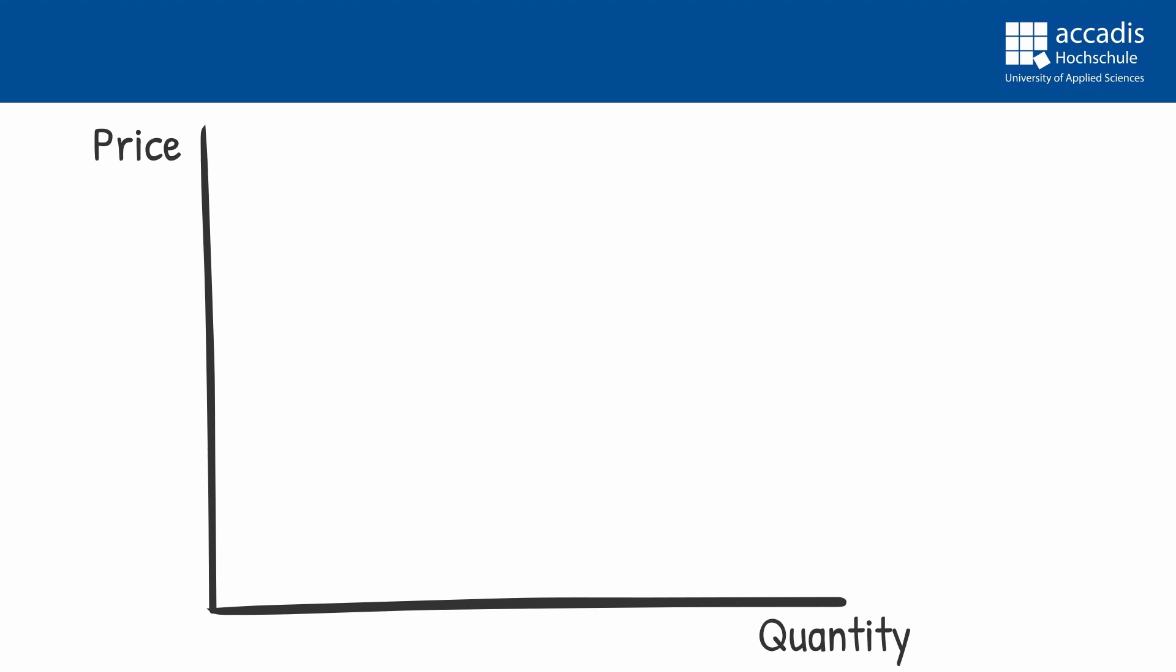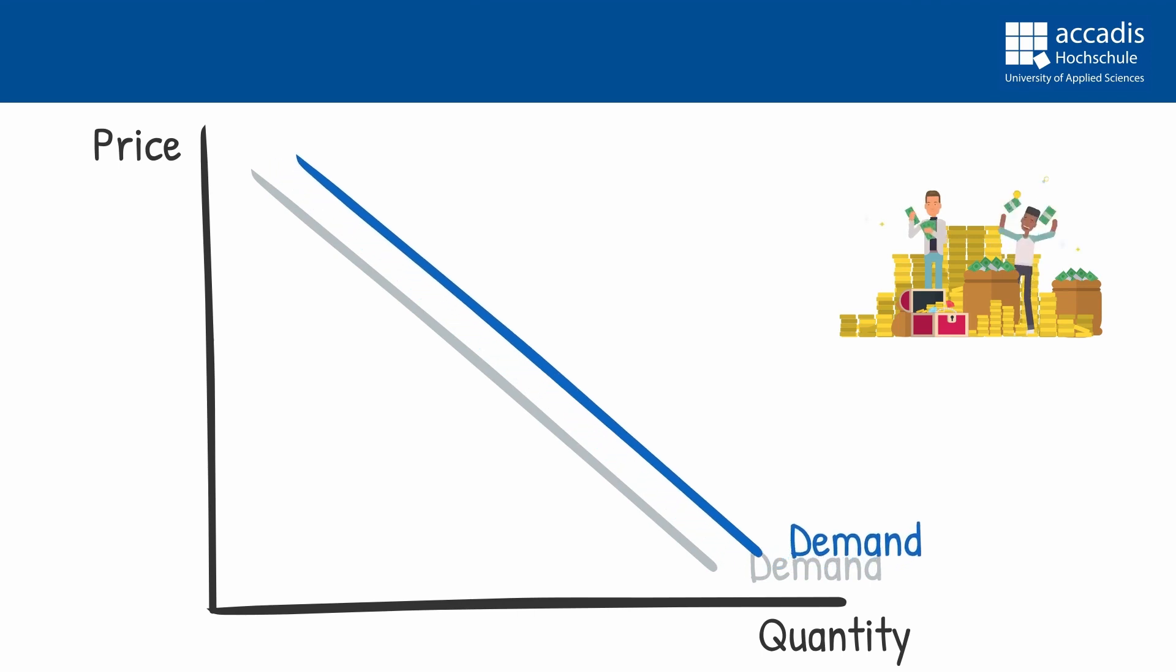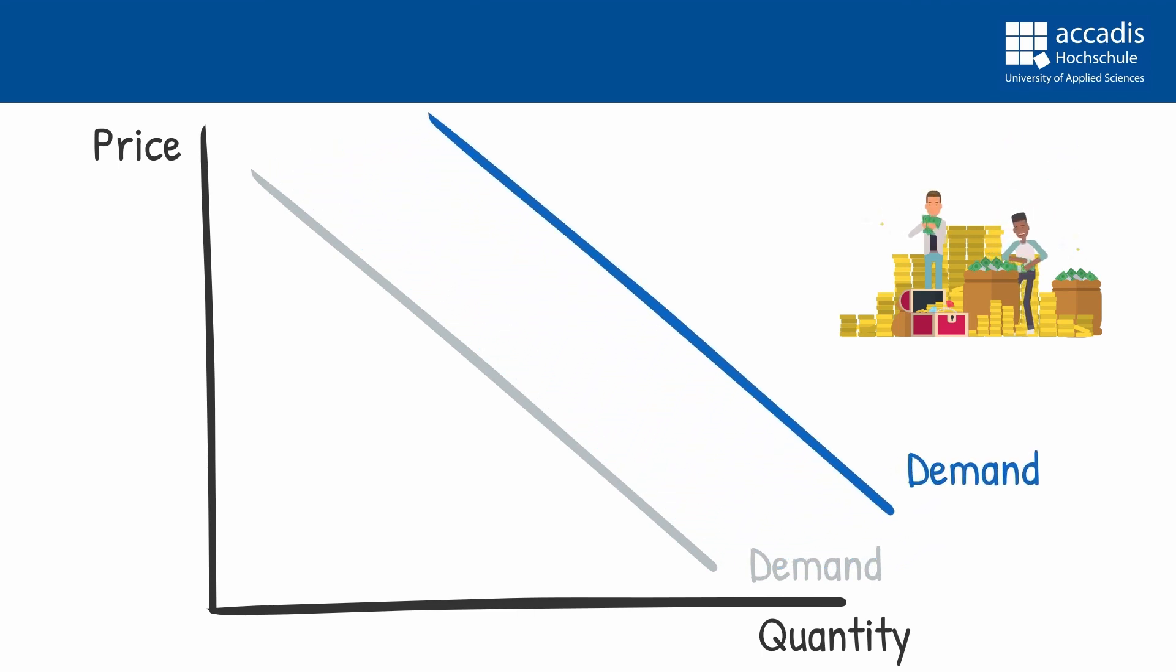So let's now see what happens to our market when external influences change demand or supply. So let's start with demand. Consider a change in the willingness to pay, for example due to a higher income. You will see that an increase in income will usually increase the willingness to pay for our consumers. So the demand curve will shift up and to the right.